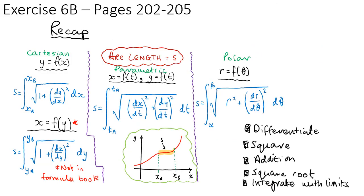You should now be able to do exercise 6b on pages 202 to 205. To recap: depending on whether the equation is Cartesian, parametric, or polar, we choose the appropriate arc length integral. The form x = f(y) isn't in the formula book but can be derived by swapping x's and y's. The steps are always: differentiate, square, use addition, square root, then integrate with limits. Be aware that the integration can require advanced techniques, including hyperbolic functions from Core 2.